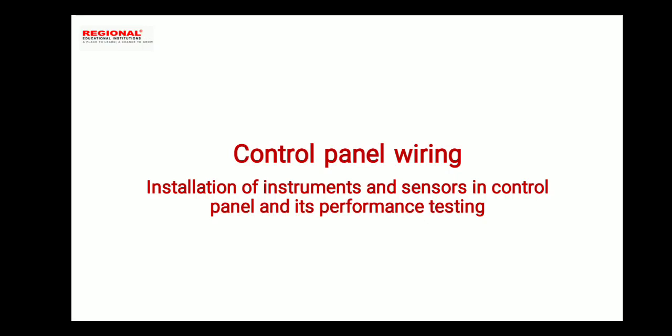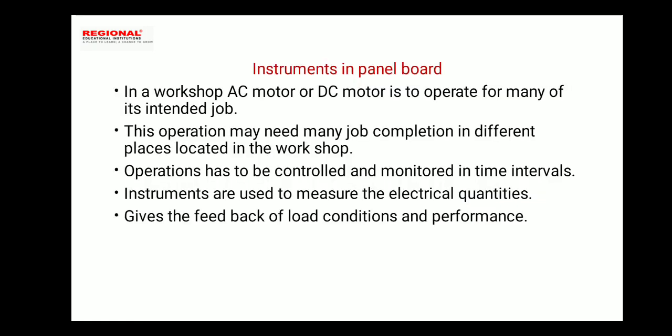Hi everyone. This is Electrician Second Year Day Theory Paper. The topic is Control Panel Wiring — installation of instruments and sensors in control panel and its performance testing. We will discuss this part of the topic. The next part covers power and control circuits. We have a panel board in a workshop with AC motor and DC motor control. We will discuss the electrical quantities — current, voltage — and the instruments fixed in the panel board.